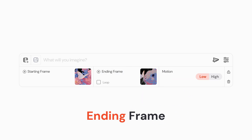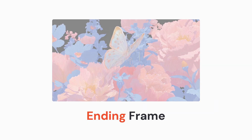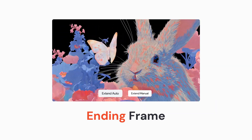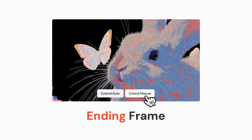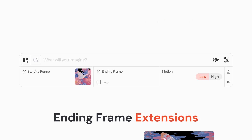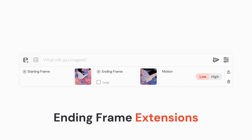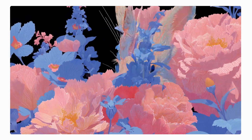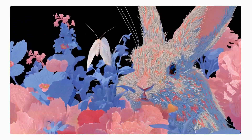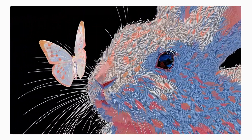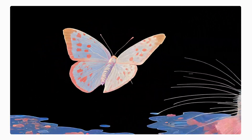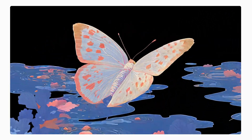You can also use your image as an ending frame to create more interesting effects and transitions. Drag and drop it into the ending frame section of the Imagine bar and guide the animation with the prompt. You can also use end frames during extensions — simply drag and drop a new image into the ending frame section while extending and add to your prompt before you submit. Our clip is now extended and we can see the butterfly land on the bunny's nose and then fly over the ocean as described in our prompt.